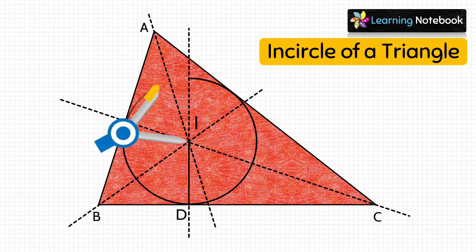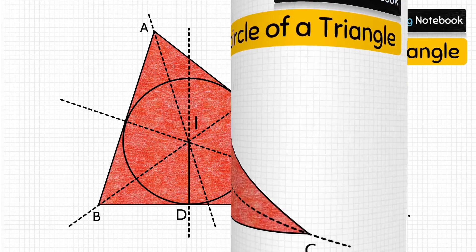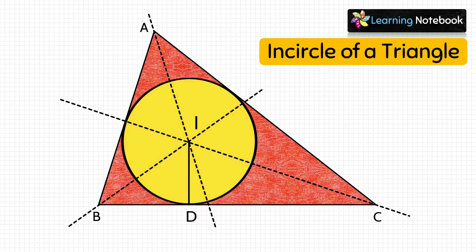Now take I as center and ID as radius. Let's draw a circle using a compass. Here the circle drawn is the incircle of this triangle. If you are doing a project on this, you can cut and paste a yellow circle on this triangle.